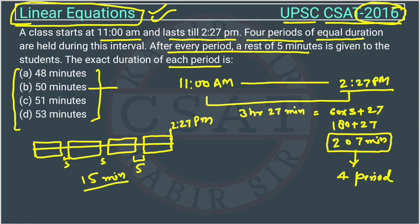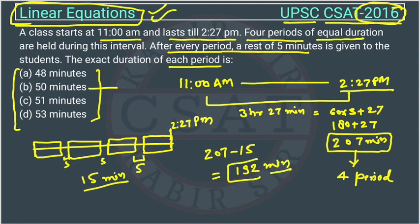Total we have 207 minutes. We will deduct 15 minutes because during these 15 minutes there is no class. So 207 minus 15 — it will become 192 minutes. We have total 192 minutes and in this we have to fit 4 periods. So what we will do? We will just divide it by 4.